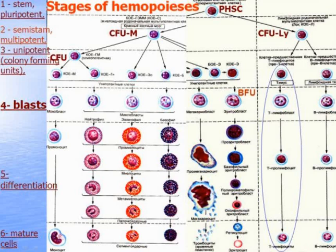So all formed elements of blood develop in red bone marrow, with the exception of T lymphocytes, which develop in the thymus from precursors.